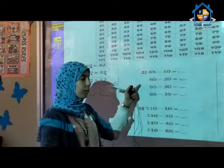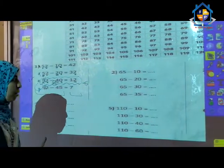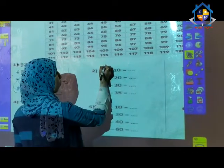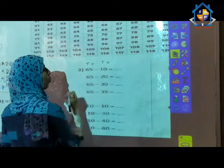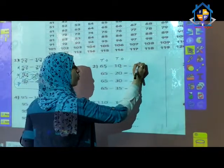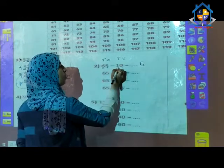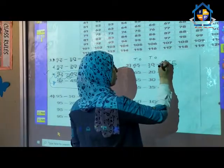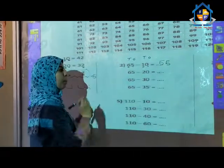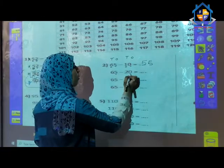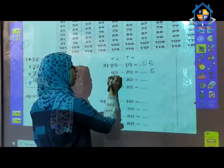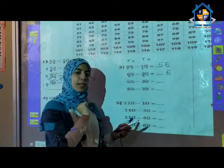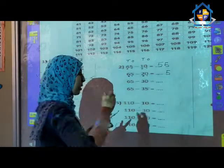Now come with me to solve exercise number 2. First problem: 65 minus 10. Start from ones: 5 minus 0 equals 5. And 6 minus 1: after 1, 2, 3, 4, 5, 6 — that is 5. Answer is 55. Second problem: 65 minus 20. 5 minus 0 equals 5. And 6 minus 2: count from 2 to reach 6 — after 2, 3, 4, 5, 6 — that is 4. Answer is 45.